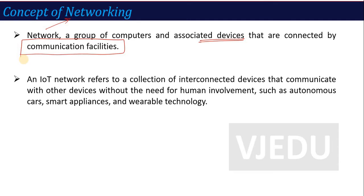In IoT reference, what is an IoT network? An IoT network refers to a collection of interconnected devices that communicate with other devices without the need for human involvement. The machine can communicate with each other — like an autonomous car, smart appliances, and wearable technology like your smart watch. A smart watch is automatically synced with your phone. In an autonomous car, the music system, temperature, and every sensor automatically communicates your value and your data. That becomes a network. This is the concept of networking.